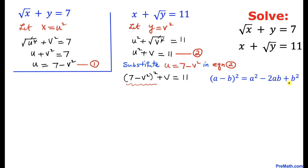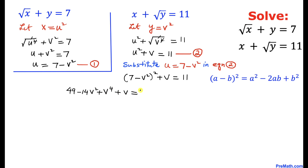Using the formula (a minus b)² equals a² minus 2ab plus b², where a is 7 and b is v squared, we get 49 minus 14v squared plus v squared squared — that's v to the power 4 — plus v equals 11.